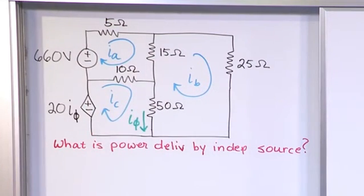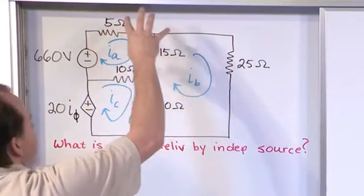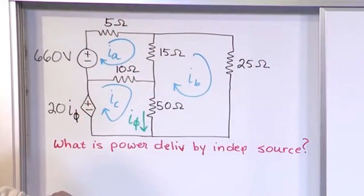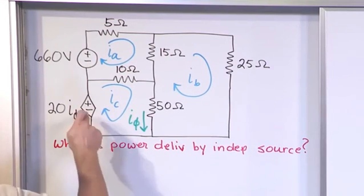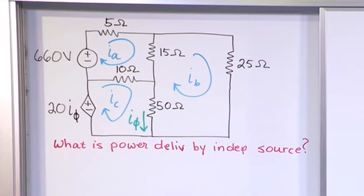We have three meshes. Let's go around and write the mesh current equations for each one. It should be no surprises. When we get done, we're going to figure out that we can't really solve it because we have this dependent source. Then we'll figure out what the constraint equation needs to be.